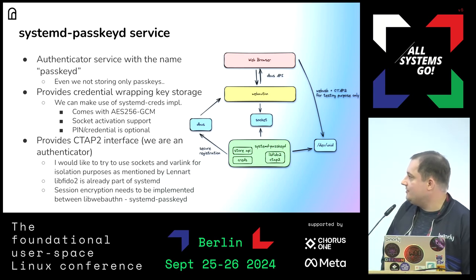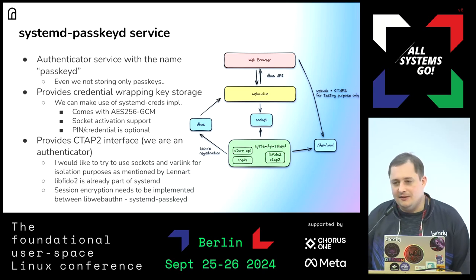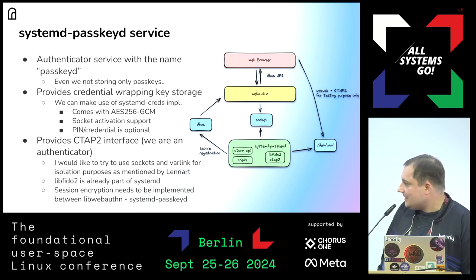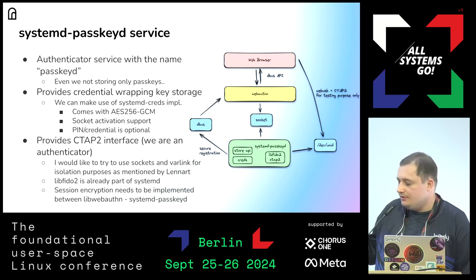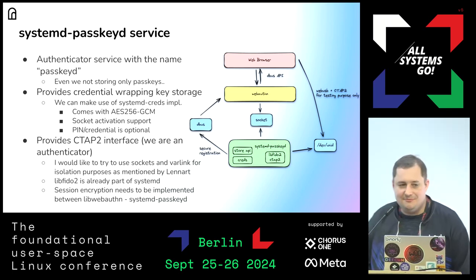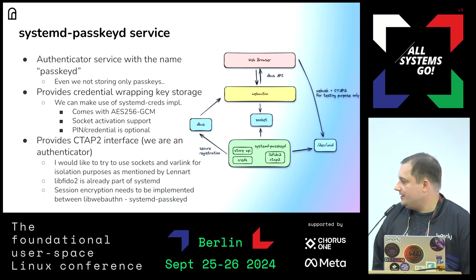I propose systemd-passkd — though I'm not sure if the name is good; we could also call it credentialsd, because it's not only maintaining passkeys but potentially any type of credentials: passwords, OTP, whatever. I propose using the systemd creds implementation — either extending it or making our own daemon utilizing its code, since it's already good design for this purpose and uses the right cryptography. It has socket activation support, which is nice, so the daemon doesn't have to run all the time blocking the TPM interface. PIN and credential use would be optional.